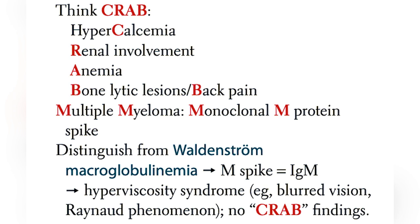Increased production of abnormal light chain proteins can cause amyloidosis. Other symptoms include renal insufficiency and anemia due to the replacement of normal bone marrow by infiltrating tumor cells.